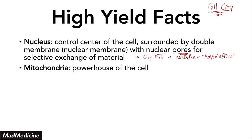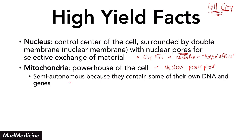Then we have the mitochondria — the powerhouse of the cell. This is the nuclear power plant of cell city. The mitochondria is actually semi-autonomous because it contains its own DNA and genes, called mitochondrial DNA. And fun fact, the DNA you're dealing with here is circular DNA. Eukaryotic DNA is mainly linear, so the mitochondrial DNA being circular is notable.